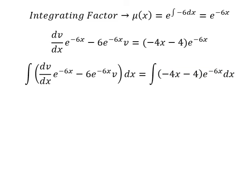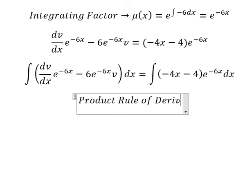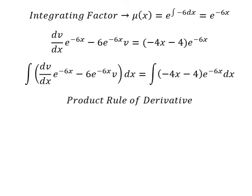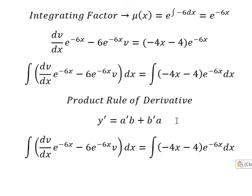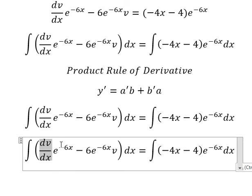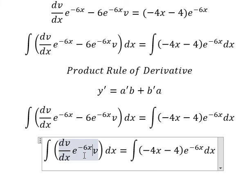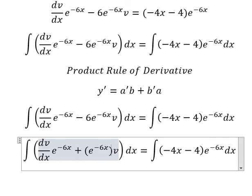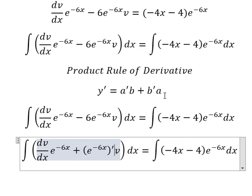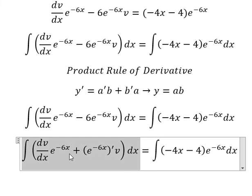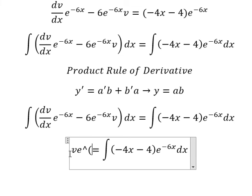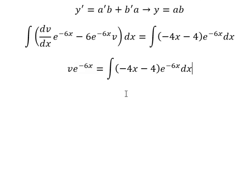Next we need to integrate both sides. We can use the product rule for differentiation: the derivative of (a·b) equals the derivative of a multiplied by b, plus the derivative of b multiplied by a. So the integral of the left side gives us v·e to the power of negative 6s. Now we need to work on the right side.